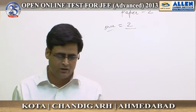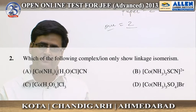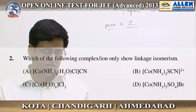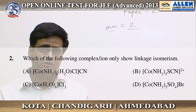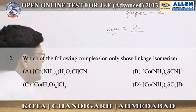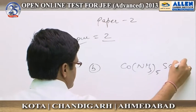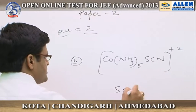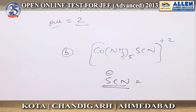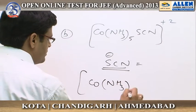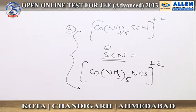Question number 2: which of the following complex or ion only shows linkage isomerism? We know that a complex compound which contains an ambidentate ligand shows linkage isomerism. In option B, the thiocyanate ion is given, and it is an ambidentate ligand. So this complex shows linkage isomerism.